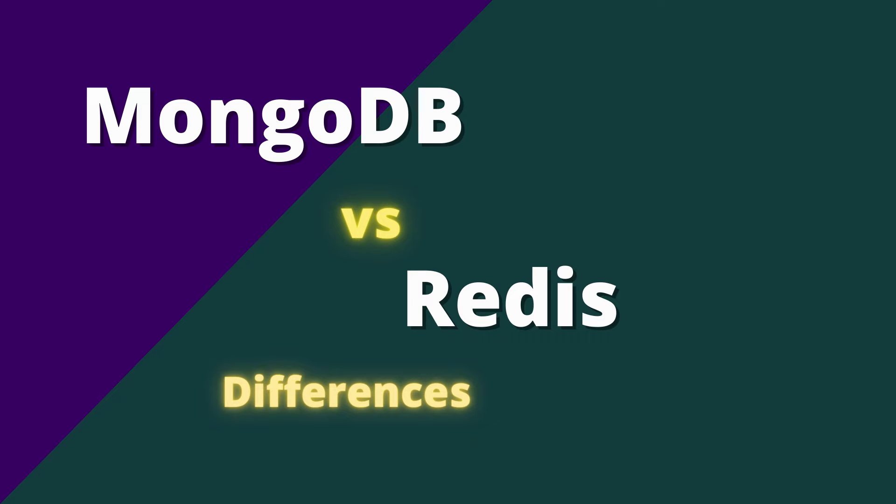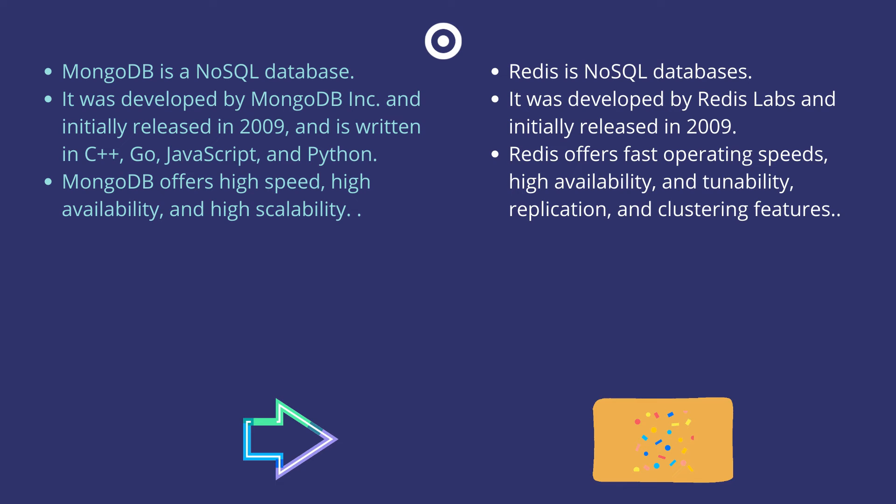Hello everyone. In this video we're going to see the difference between MongoDB and Redis. Both MongoDB and Redis are NoSQL databases. MongoDB was developed by MongoDB, and Redis was developed by Redis Labs.